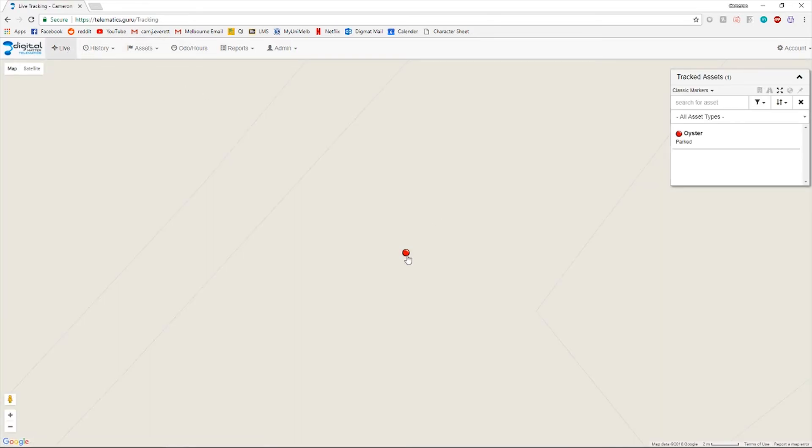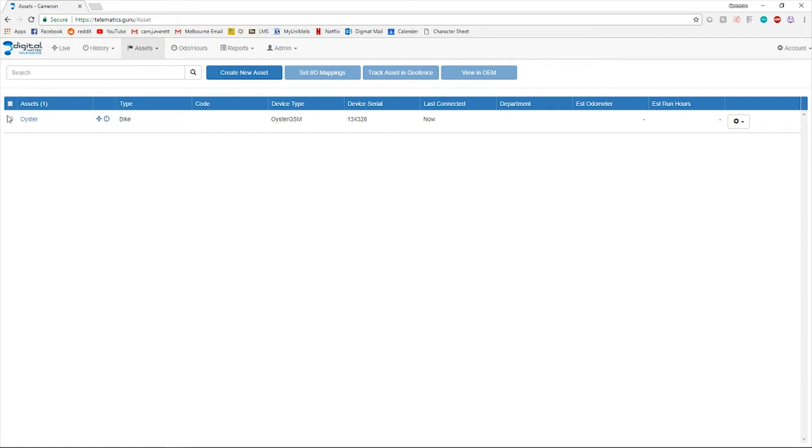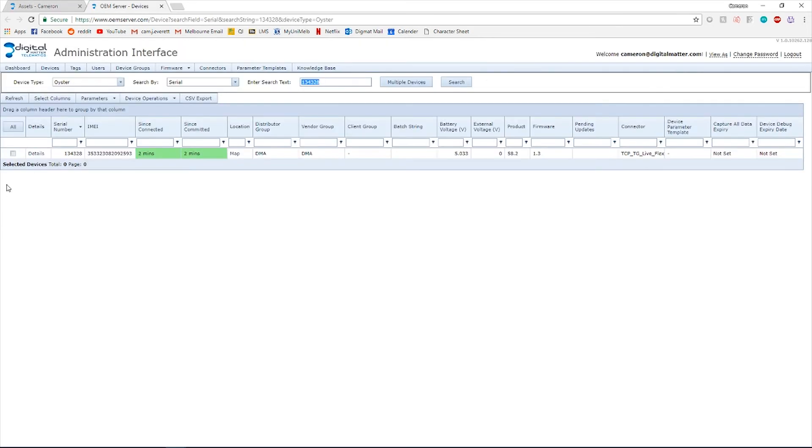From Telematics Guru, you can also view device history, set up geofences and customize alerts to your specifications, such as an alert on the device moving or stopping or even just jostling. You can also put the device into recovery mode, which switches it to live tracking, perfect for locating stolen assets.